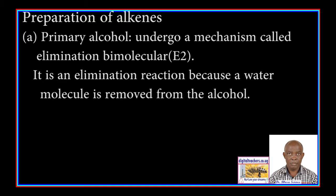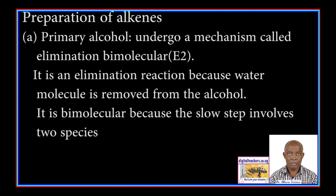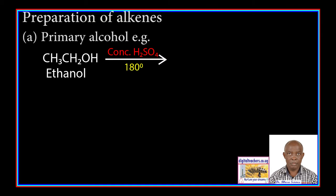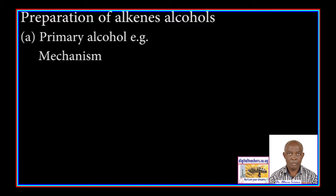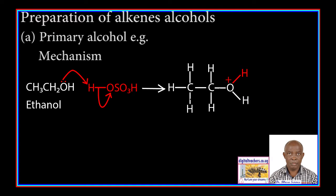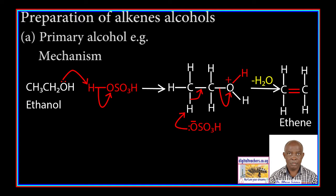It is an elimination reaction because a water molecule is removed from the alcohol. As seen in the mechanism, ethanol picks a proton from sulfuric acid to form a protonated alcohol. Then the sulfate ion removes a hydrogen atom from a carbon atom next to the one carrying the protonated water molecule, and the bond between the carbon atom and the protonated water breaks to form an alkene.